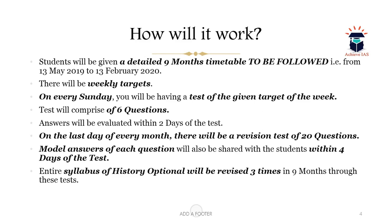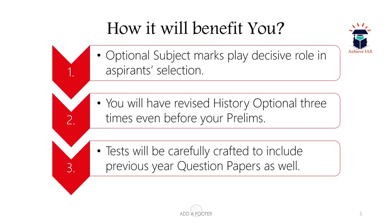The history optional syllabus will be revised three times in nine months through these tests. The optional subject plays a decisive role in your selection — it has two papers (Paper 1 and Paper 2) totalling 500 marks, which is approximately 28.5% of the total mains marks of 1750, close to one-third. It also impacts the service and cadre you receive. Tests will be carefully crafted to include previous year questions.